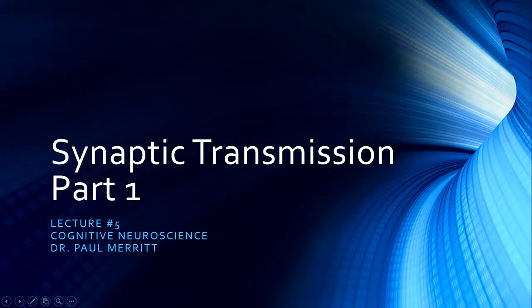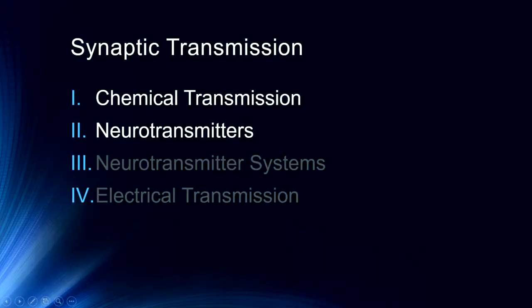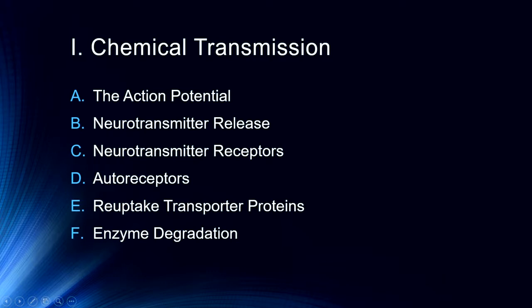Hello and welcome to our fifth lecture as we continue discussing neurons and neurotransmission in this series in cognitive neuroscience. In this lecture we'll be talking about chemical transmission, in particular how that process works and discussing neurotransmitters themselves. We're going to review a little bit about the action potential and then talk about what happens when the action potential reaches the end of an axon, triggering the release of neurotransmitters.